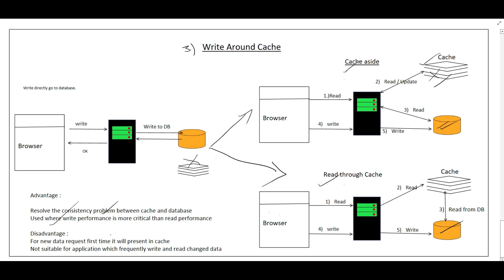The disadvantage of Write Around Cache: whenever data is requested for the first time from the cache, it will not be available because we have not written to the cache — writes go to the DB. So it has to fetch from the DB, update the cache, and then return the response. It is not suitable for applications where writes to the database are frequent and reads are also very frequent, because there will always be a cache miss. That's all about caching strategies — I hope you liked the video. Please subscribe to the channel to learn more about system design topics.